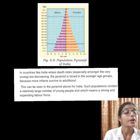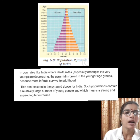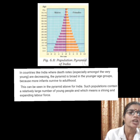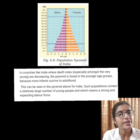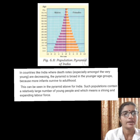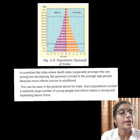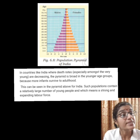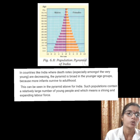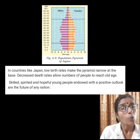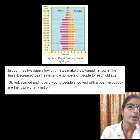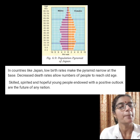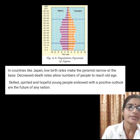See the population pyramid of India. In the case of India, death rates especially amongst the very young are decreasing. Therefore, the pyramid is broad in the younger age group because more infants survive to adulthood. In countries like Japan, low birth rates make the pyramid narrow at the base.